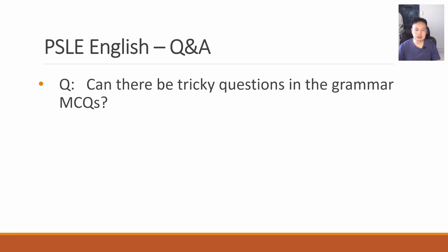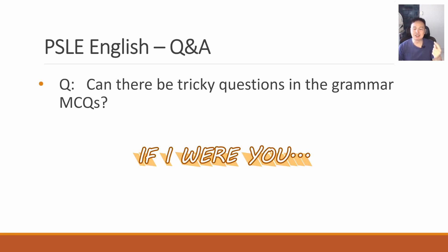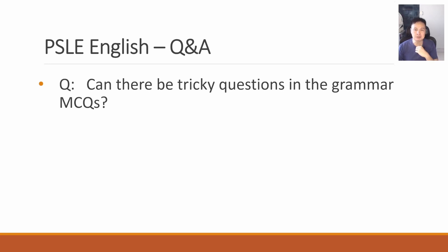Can there be tricky questions in the grammar MCQs? Of course — in any part of the paper. The workaround is to always read carefully so that you don't get tricked. For example, many students are familiar with simple past and simple present, but some tenses are not real tenses. For example, 'If I were you' — the reason 'were' is used is because it's impossible for me to be you. So the verb 'were' is not a real simple past tense. This is an example of a tricky question in the grammar MCQ.